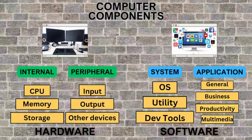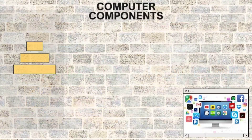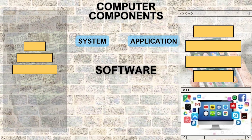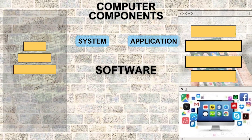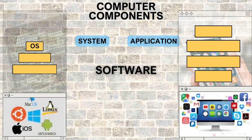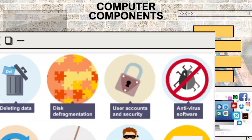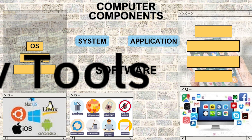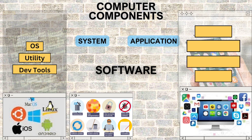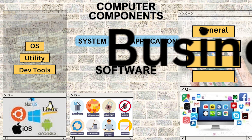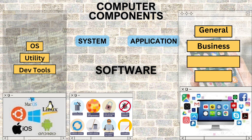Computer software includes system software and application software. The operating system has foundational instructions. Utilities provide core functionality and dev tools for translation. Application software is numerous, from general purpose to business apps.